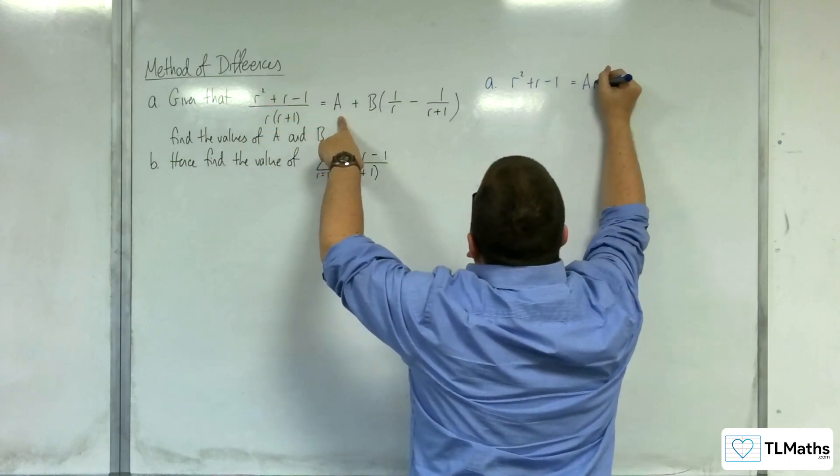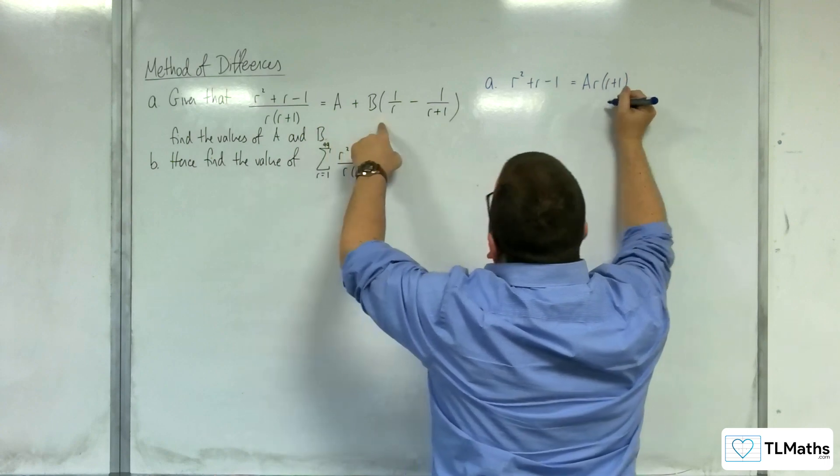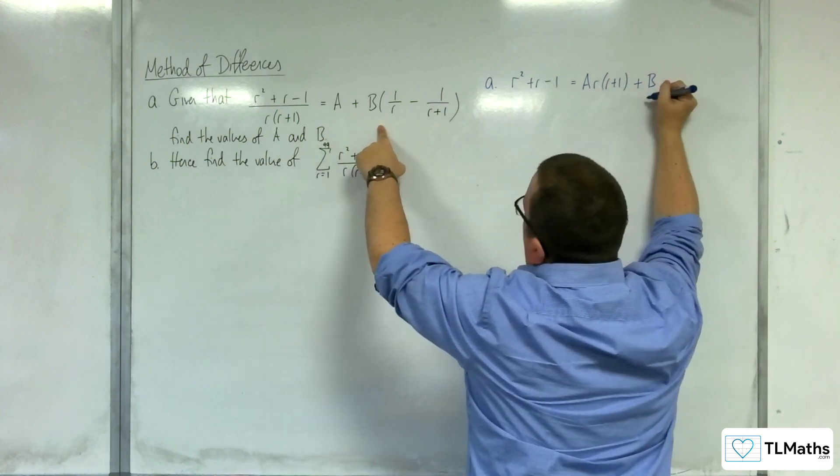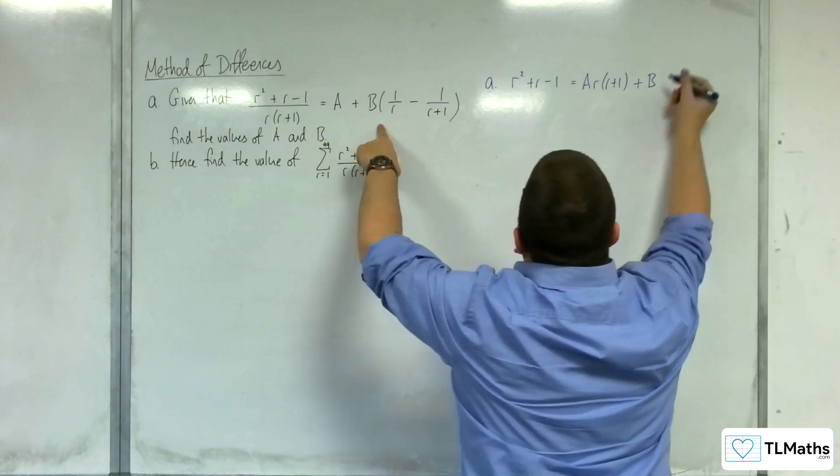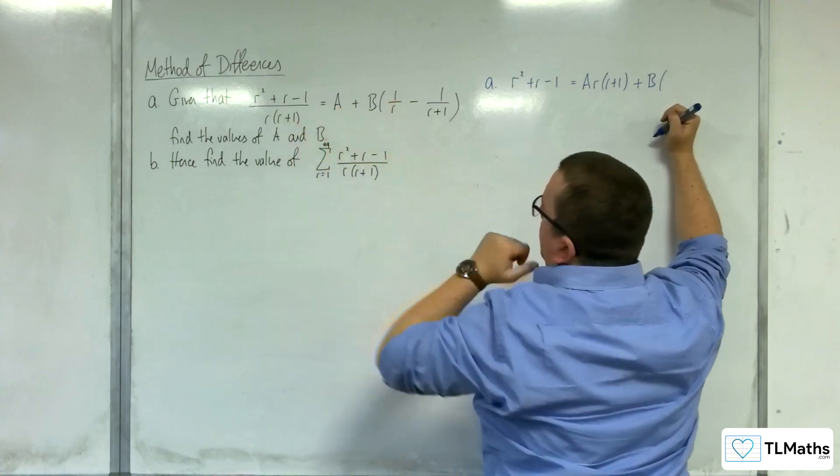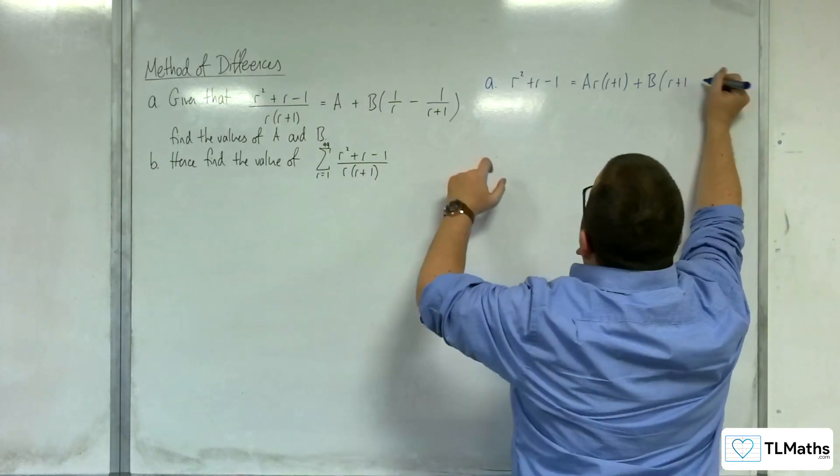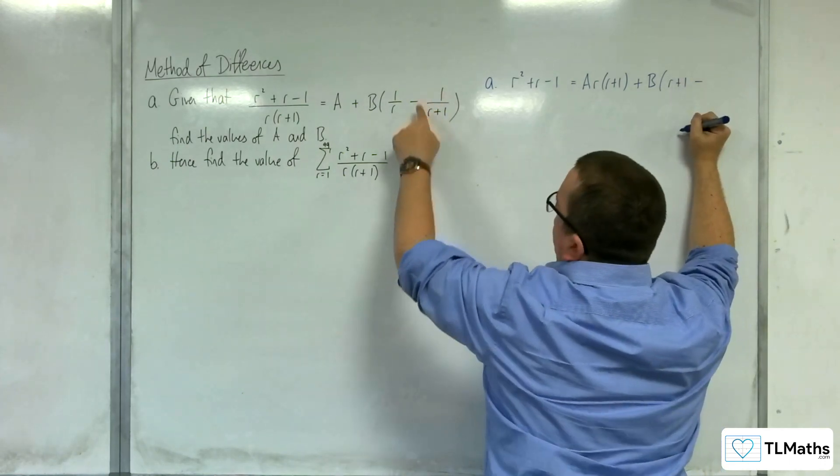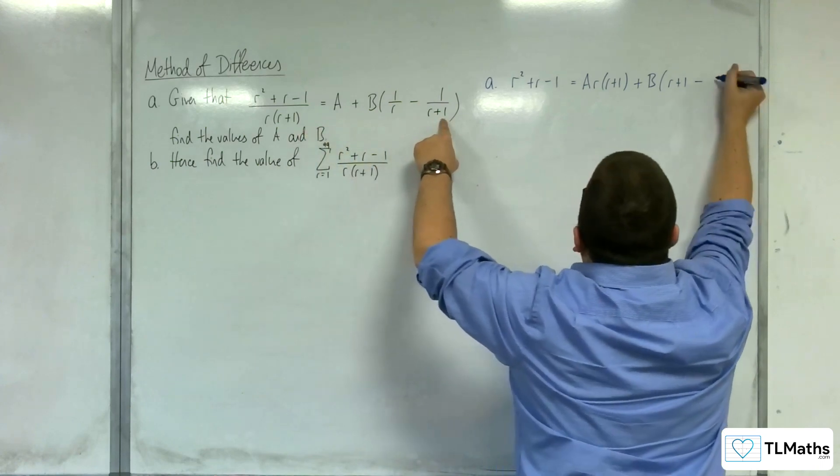We're going to have a times r times (r plus 1), plus b times, so in our bracket we're going to have 1 over r times that, so we're just going to be left with r plus 1. And then take away 1 over r plus 1 times r(r plus 1), which is going to be take away r.